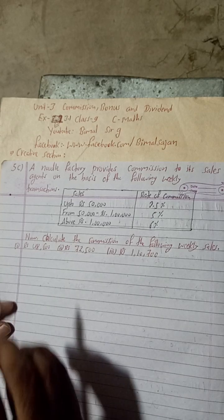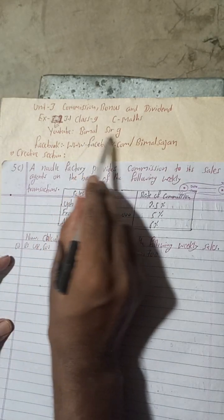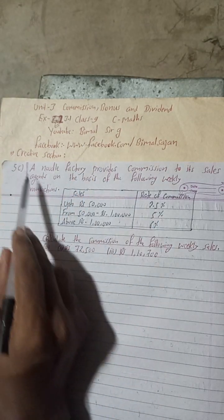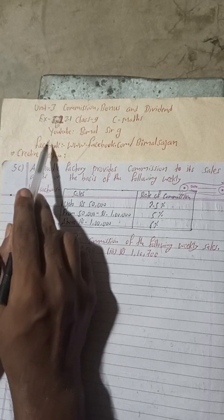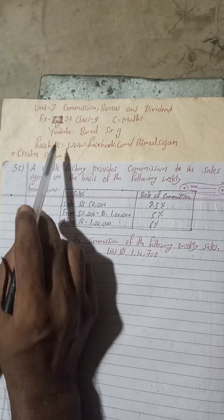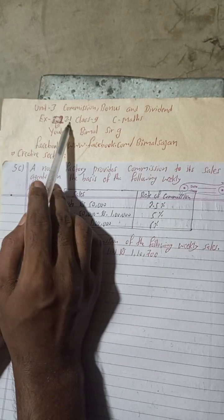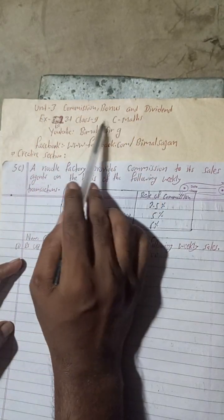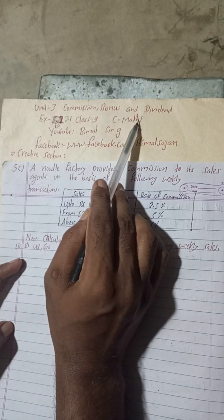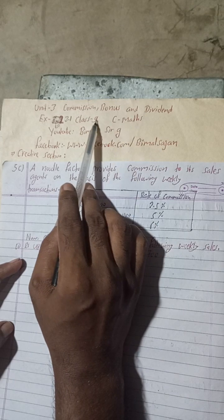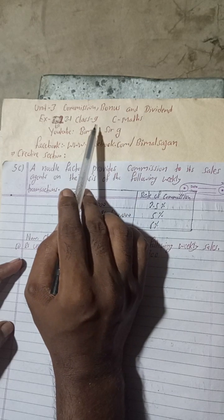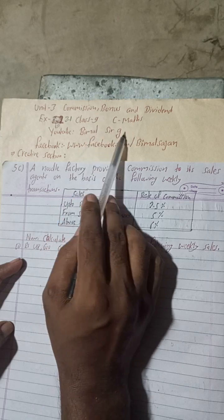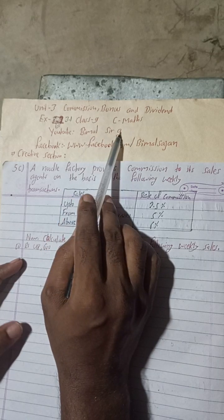Hi everybody, welcome back to Bimal Swarji's YouTube channel. This is question number 5c of creative section exercise 3.1, unit 3: commission, bonus and dividend, class 9 compulsory math. Class 9 and 10 students, you can subscribe to this YouTube channel.